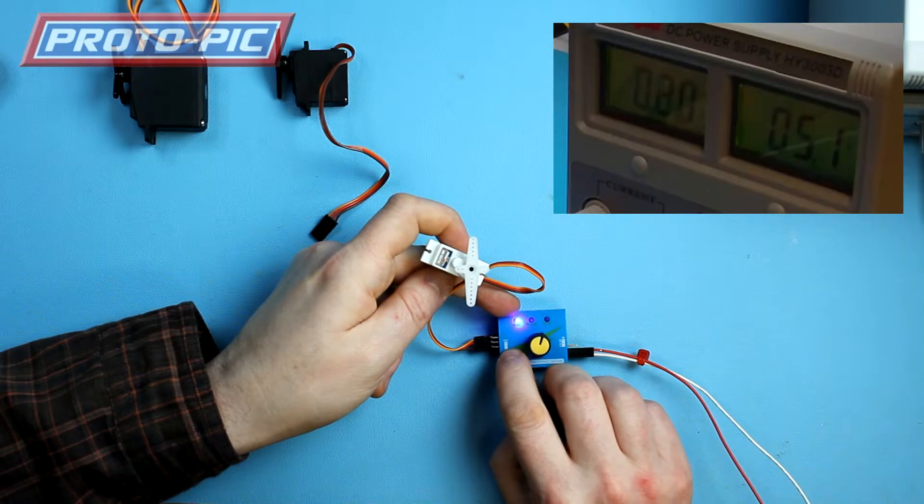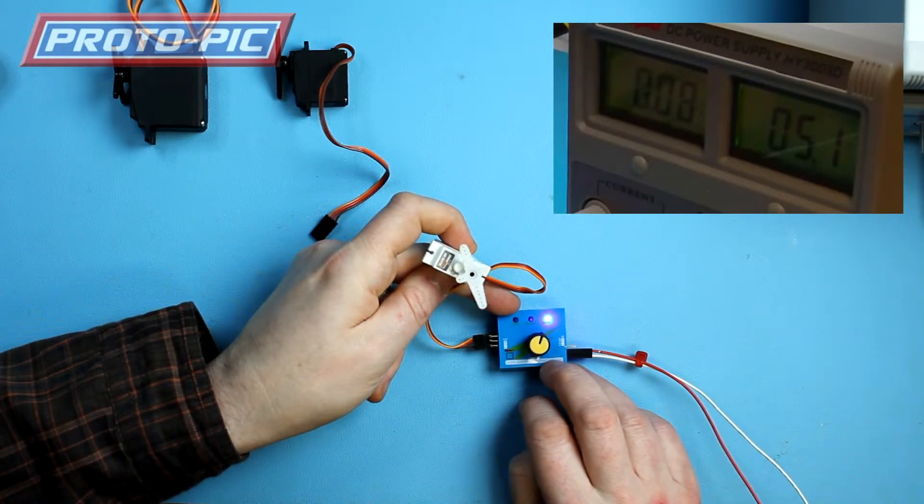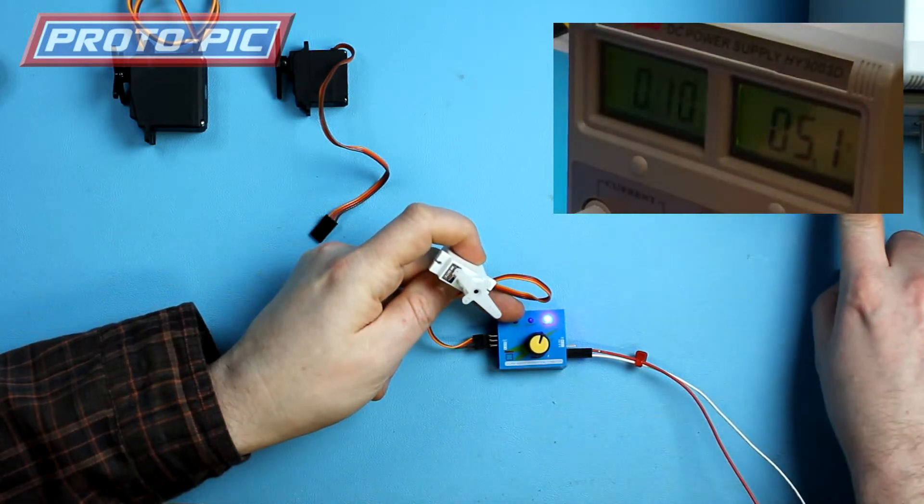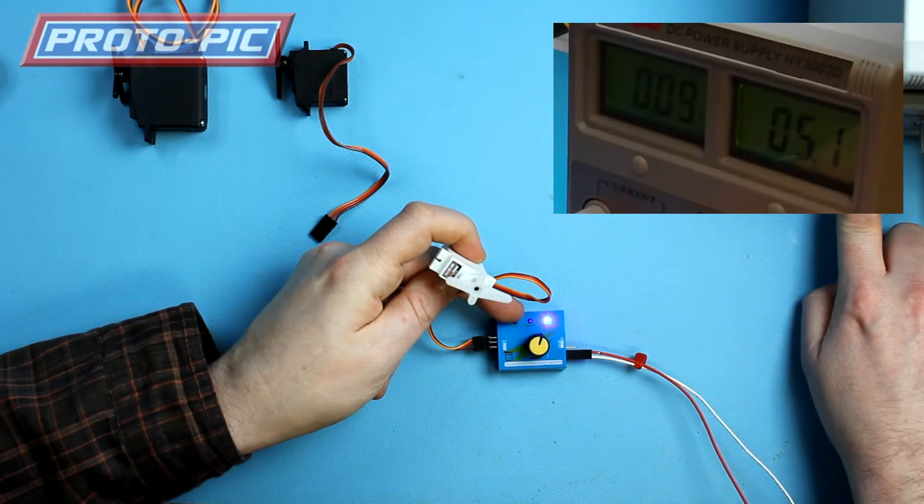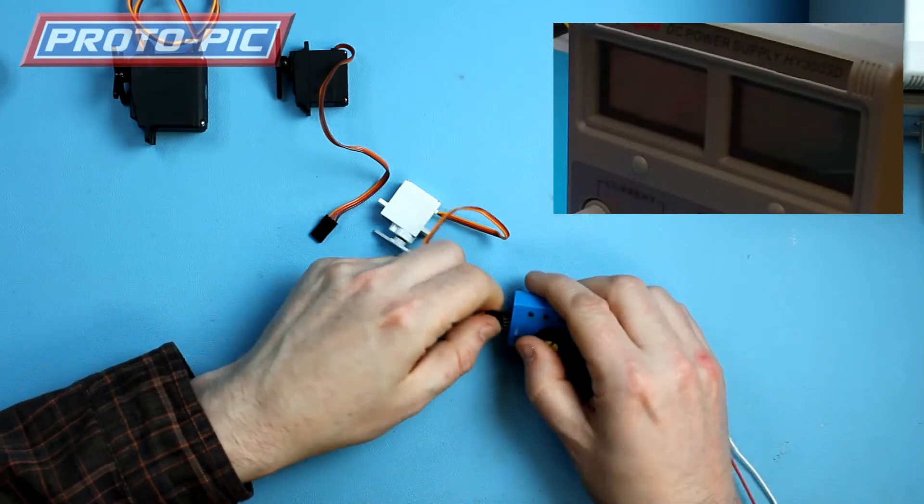Then I can select to go to the neutral position. Or auto just drives it back and forward between its two extremes. Okay so that's peaking at about 0.1 of an amp as it goes back and forward there on the power supply. So I just switch that off. Disconnect the small servo.